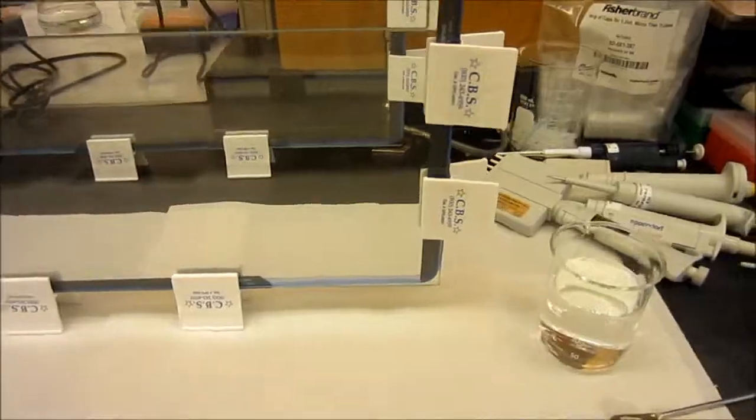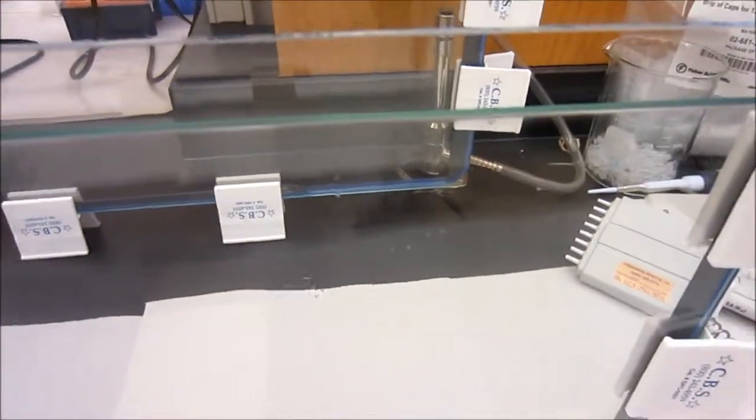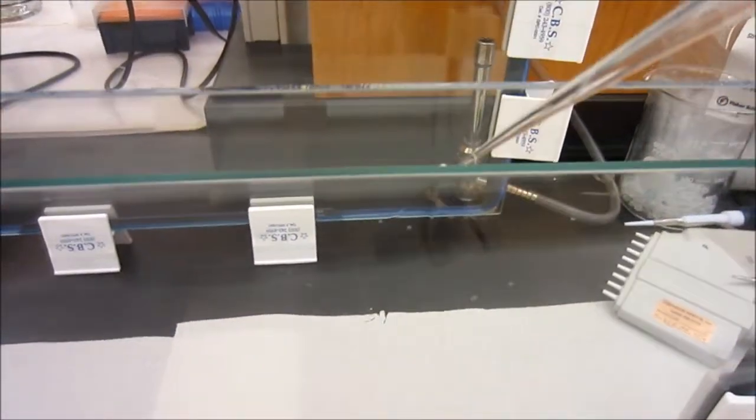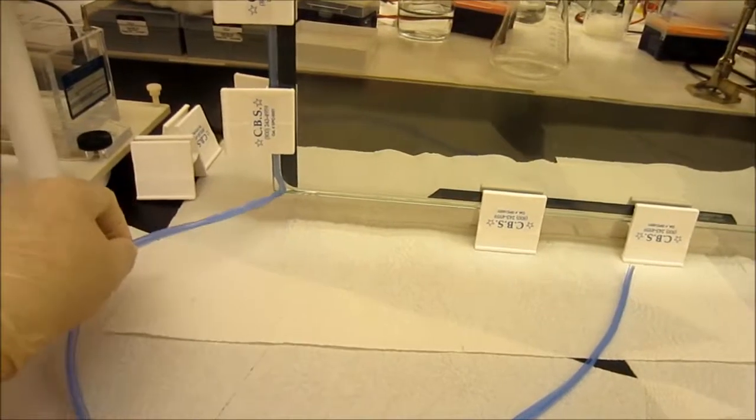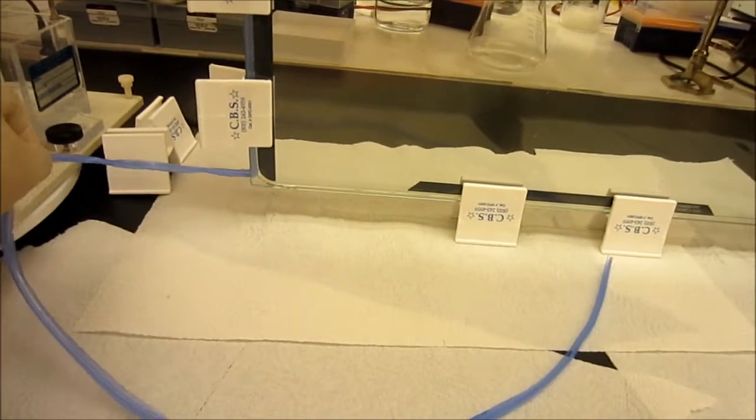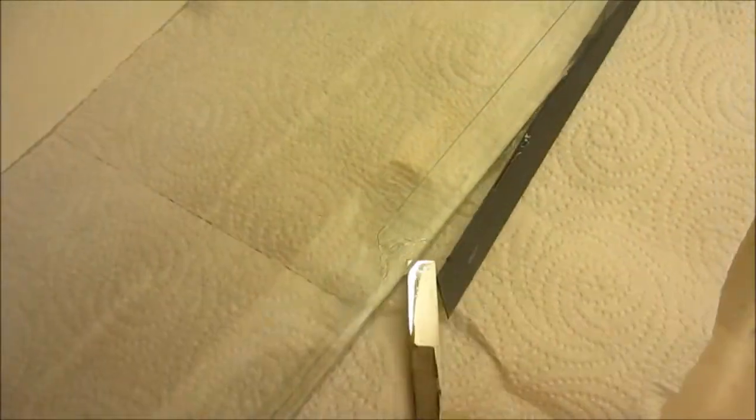In this step, the gel solution is poured or pipetted into the glass slide. After letting the gel set for 45 minutes, the gasket and bottom spacer are pulled out from the glass slide.